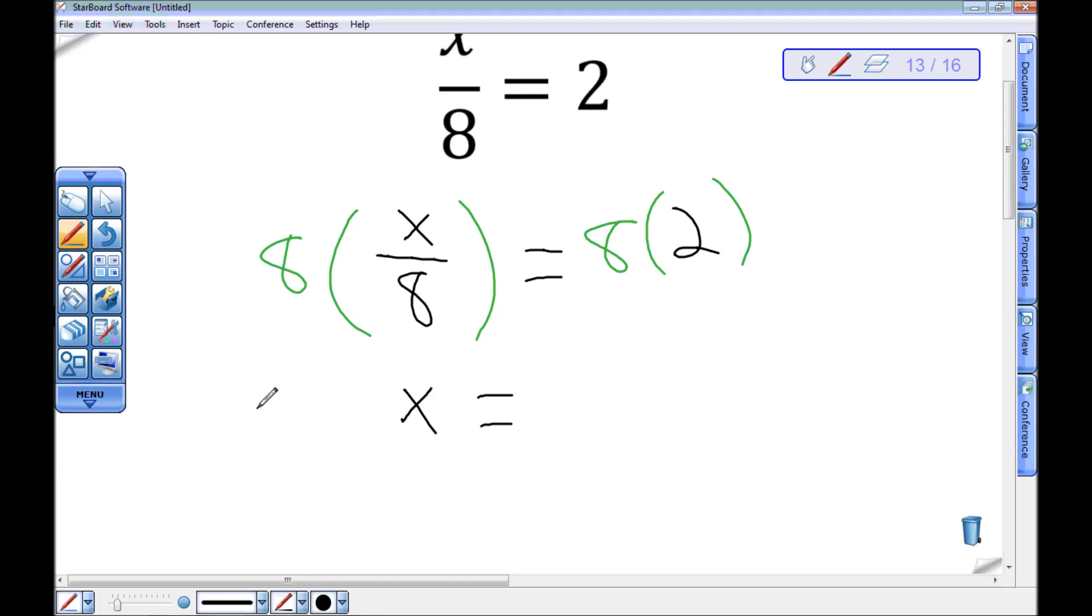If you're not sure why, pick any number, like 17. 8 times 17 divided by 8 is 136 divided by 8 is 17. But whatever number you pick, if you multiply it by 8 and then divide it by 8, you'll get back where you started.